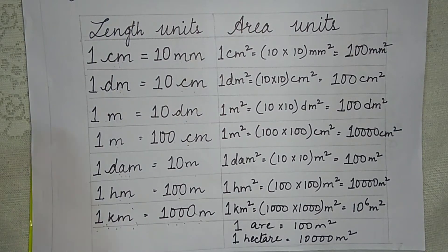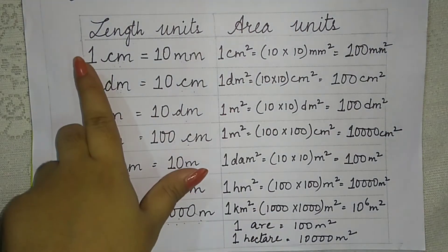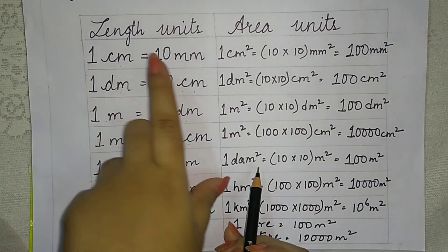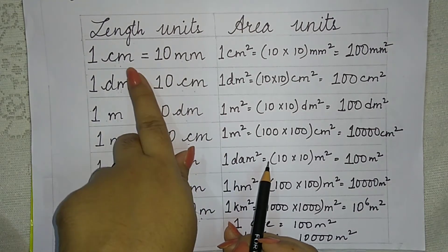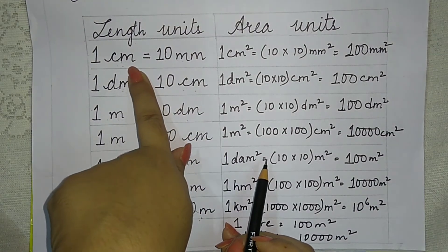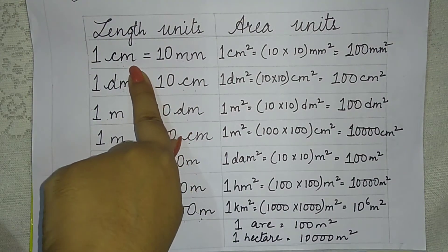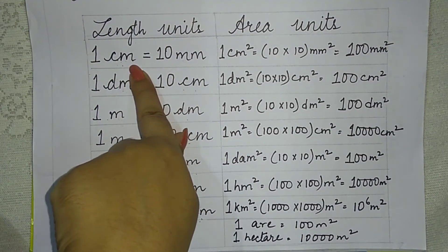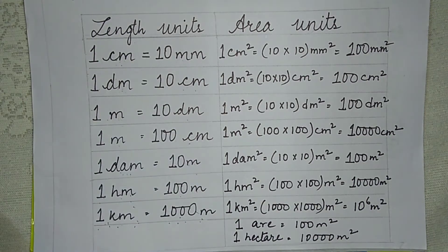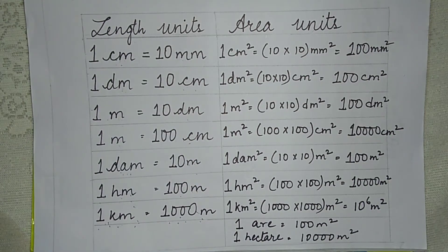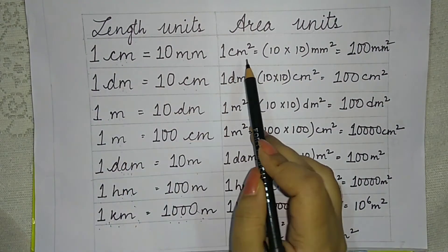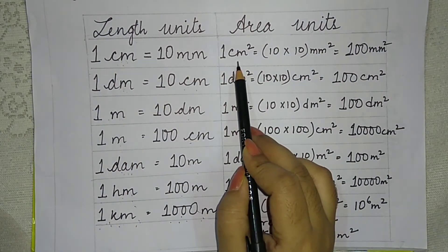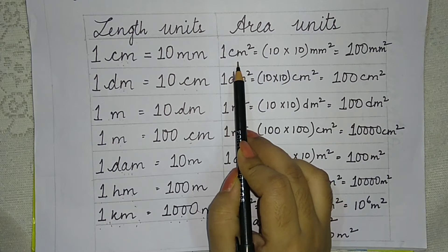Now here, 1 centimeter is equal to 10 millimeters. We will convert this to area units. Area units are always square. So 1 centimeter corresponds to 1 centimeter square.